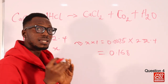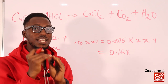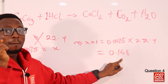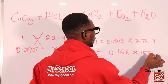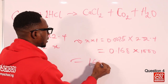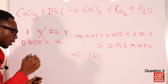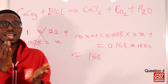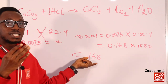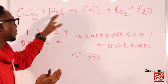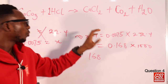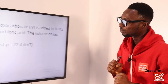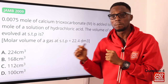The units in the options are given in cm³, so we confirm the answer is 168 cm³ of gas evolved at STP. Going back to the screen — we have option B, so option B is the correct option.